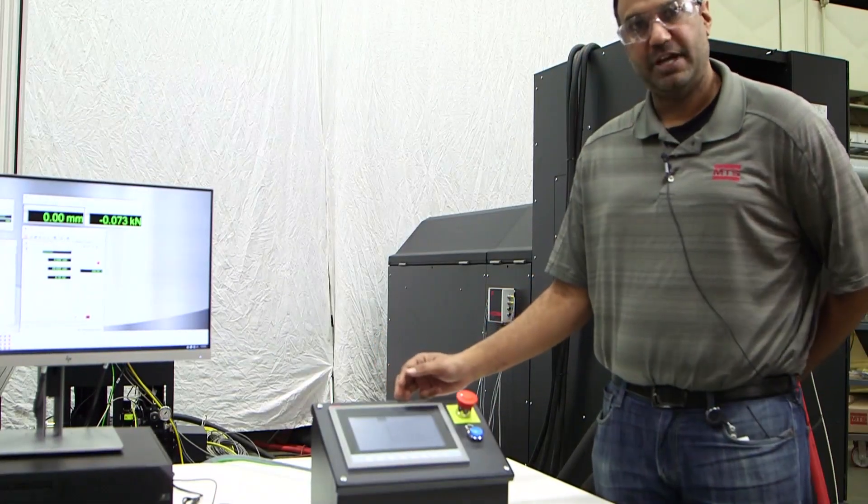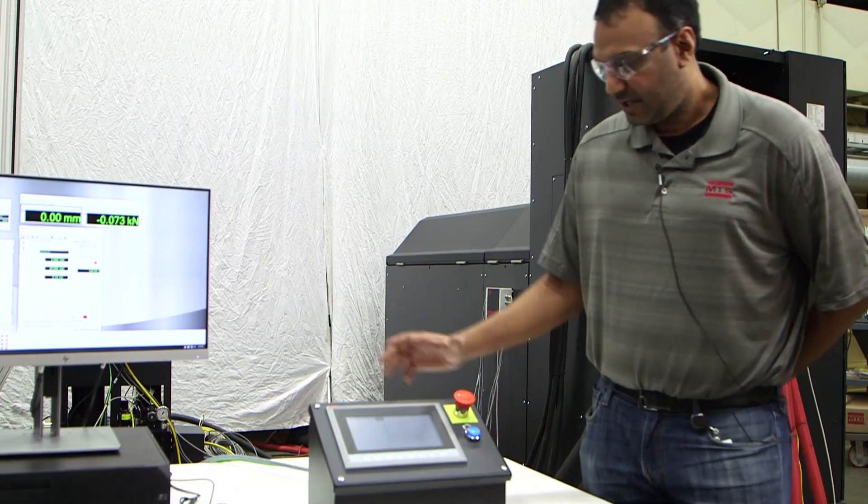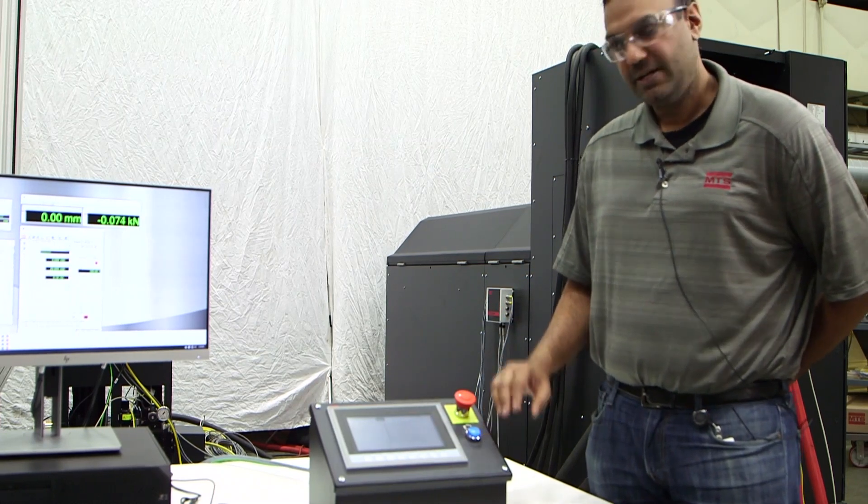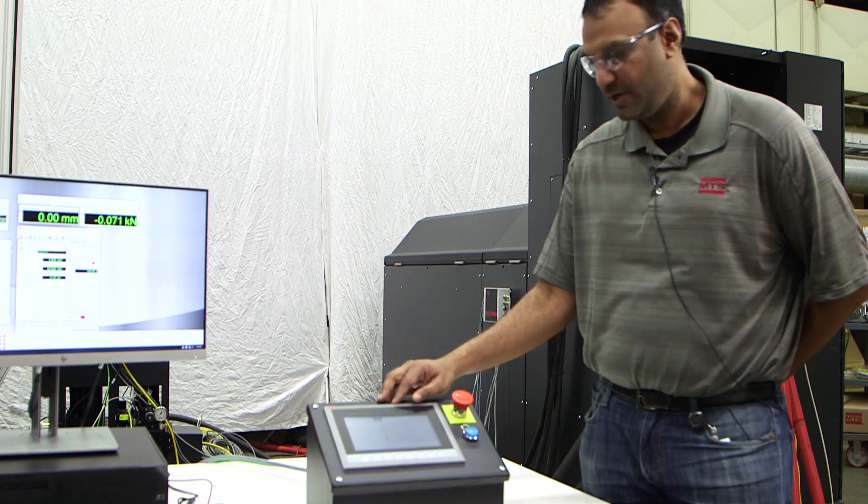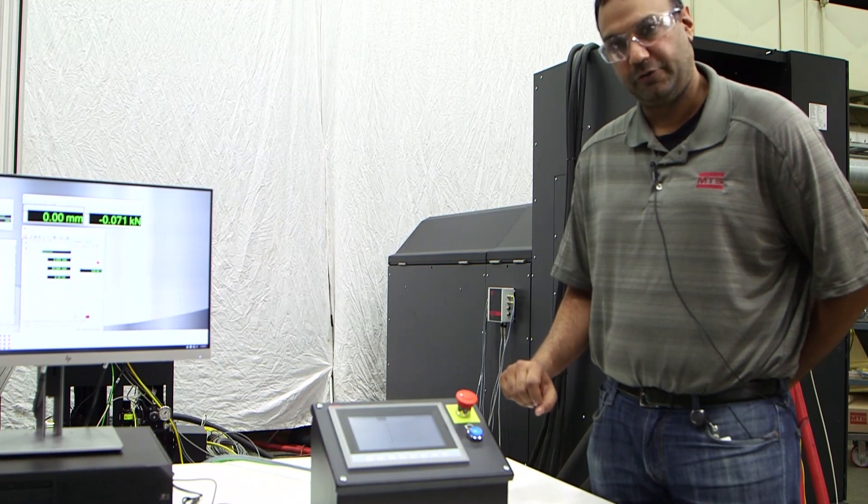This is the 274-10. It is the Safeguard User Interface box. It's got the HMI, an e-stop, and a reset button. This gives all the status indication for the safety system and if there's an alarm the indication will light up also.